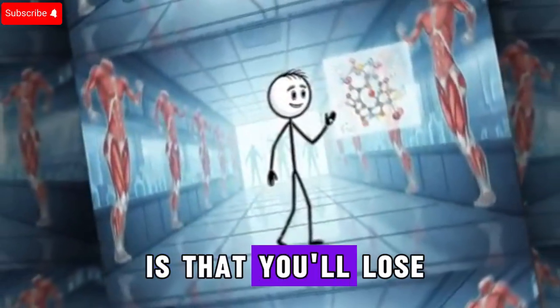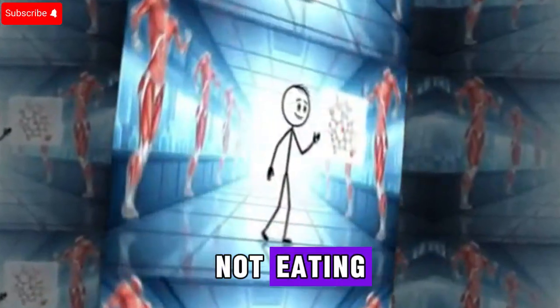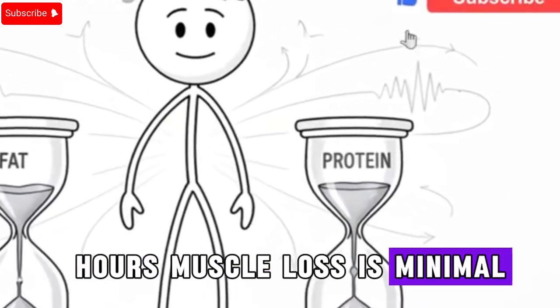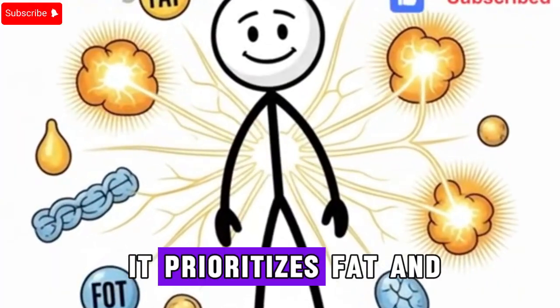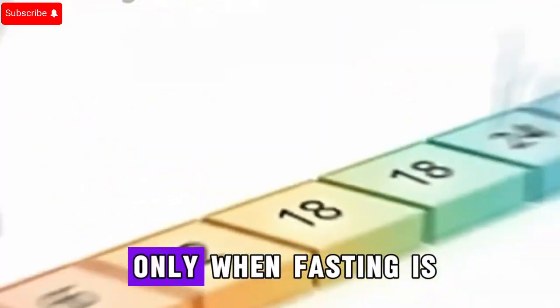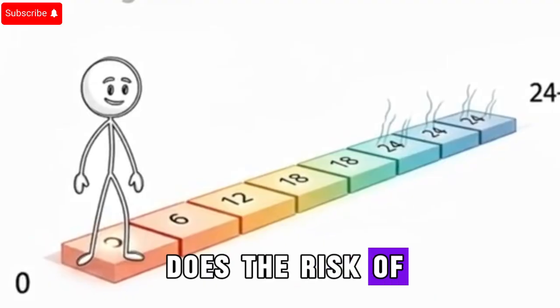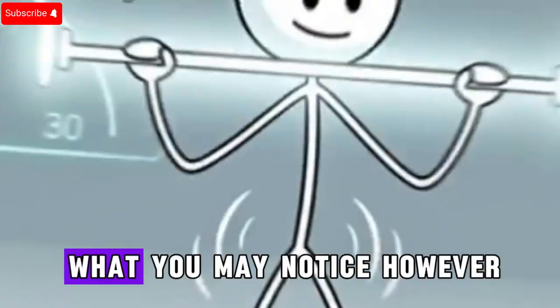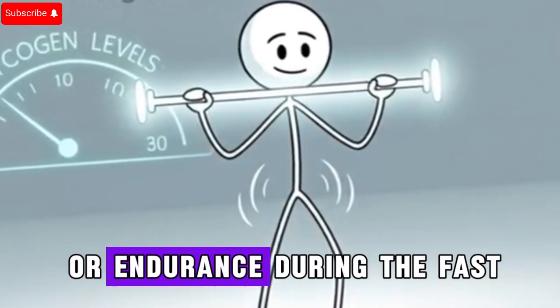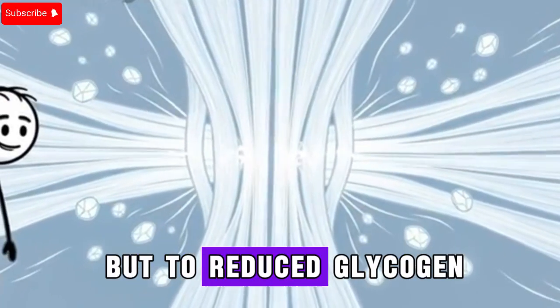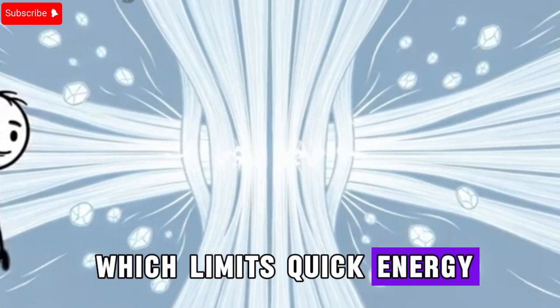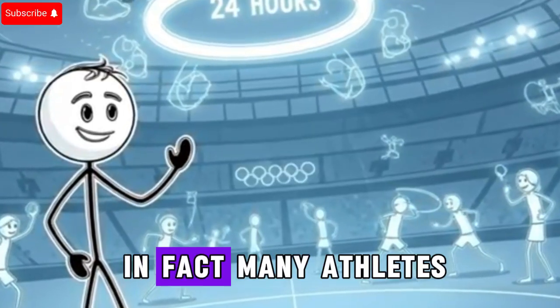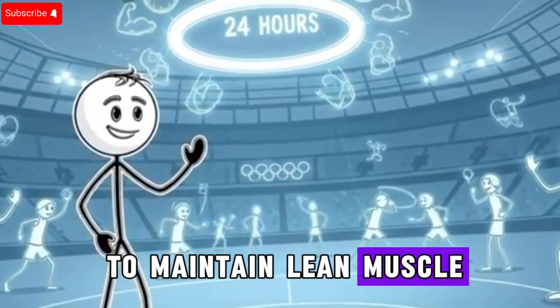A common fear about fasting is that you'll lose muscle mass. After all, if you're not eating, won't your body break down protein for fuel? The reality is more nuanced. In the first 24 hours, muscle loss is minimal. Your body is intelligent. It prioritizes fat and glycogen breakdown before touching protein. Only when fasting is extended far beyond a day does the risk of significant muscle breakdown increase. For short-term fasting, growth hormone actually helps protect muscles. What you may notice, however, is a slight drop in physical strength or endurance during the fast. This isn't due to muscle loss but to reduced glycogen in your muscles. In fact, many athletes use intermittent fasting to maintain lean muscle while reducing fat.